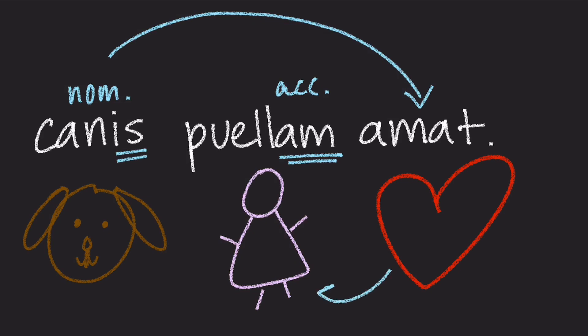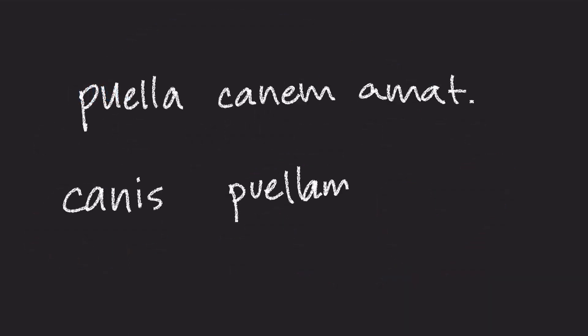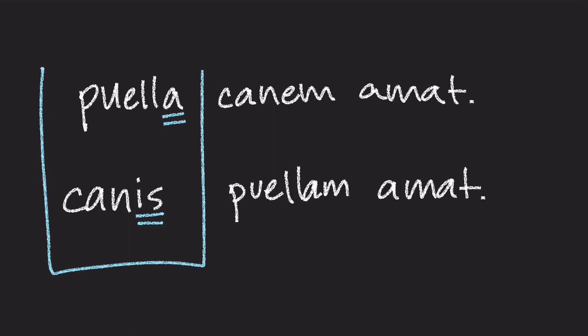The dog is the one who's loving, which makes him the subject, so he is in the nominative form — he is doing the action in the sentence. In our first sentence, Puella Kanem Amat, the girl was the one doing the action; she loves the dog. So the dog is not the one loving in that sentence — he's receiving the love. As such, he is in his accusative form, which is Kanem.